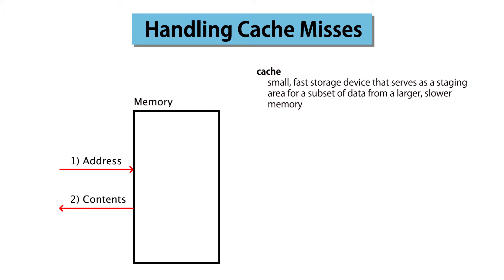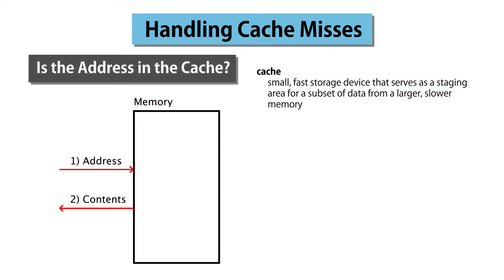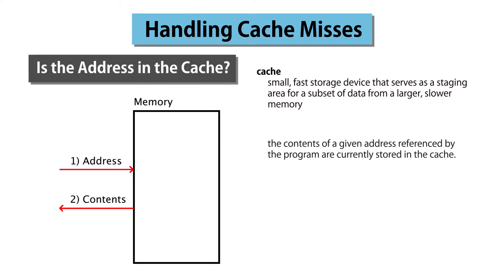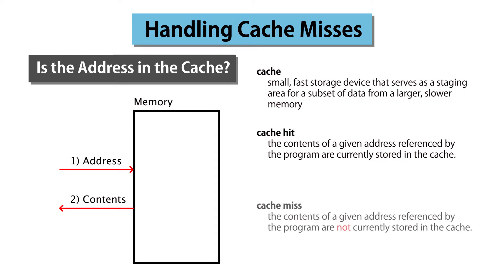The contents of addresses that have been accessed recently, or which the processor thinks might be accessed in the near future, are copied into the cache. Subsequent accesses to those locations will be fast, compared to accesses to locations that are not stored in the cache. For caching to work, we need to be able to determine whether the contents of a given address referenced by the program are currently stored in the cache. If so, that's called a cache hit; otherwise we have a cache miss. In the case of a hit, we simply deliver the contents of that memory location from the cache.